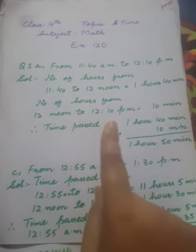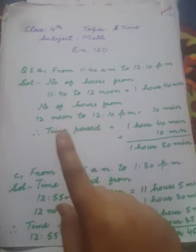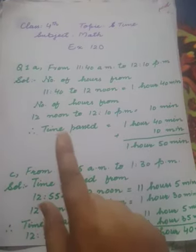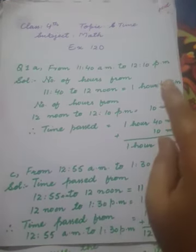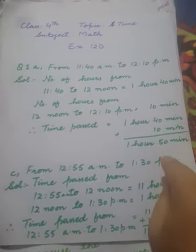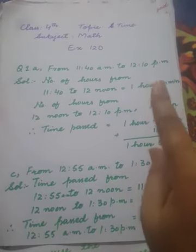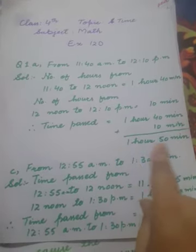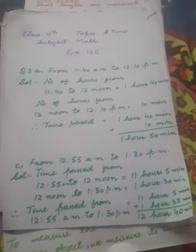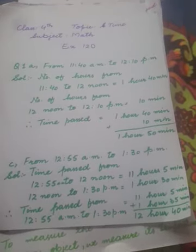From 12:00 noon to 12:10 PM, only 10 minutes have passed. So the total time passed is 20 minutes plus 10 minutes. That is 40 plus 10 is 50 minutes, and 1 hour — meaning from 11:40 to 12:10, 1 hour 50 minutes has passed. Now see part b: from 12:55 AM to 1:30 PM.